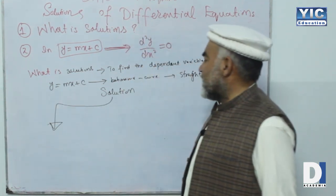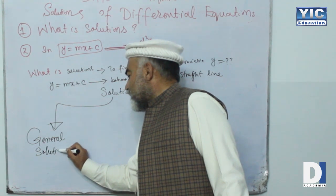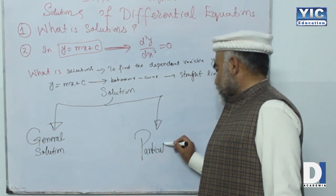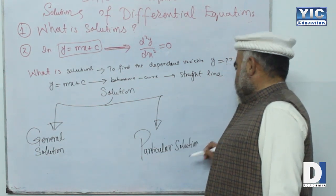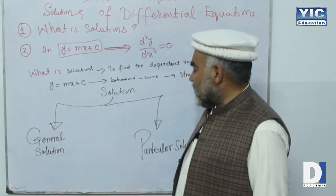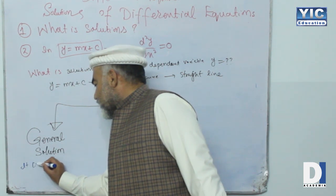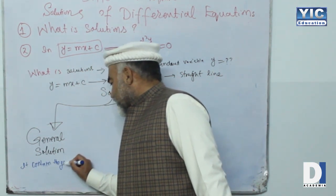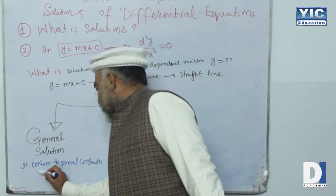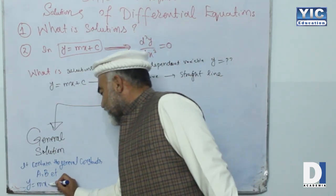The solution is of two types. One is the general solution and the other is the particular solution. The general solution contains the general constants — it contains general constants like a, b, c, etc.